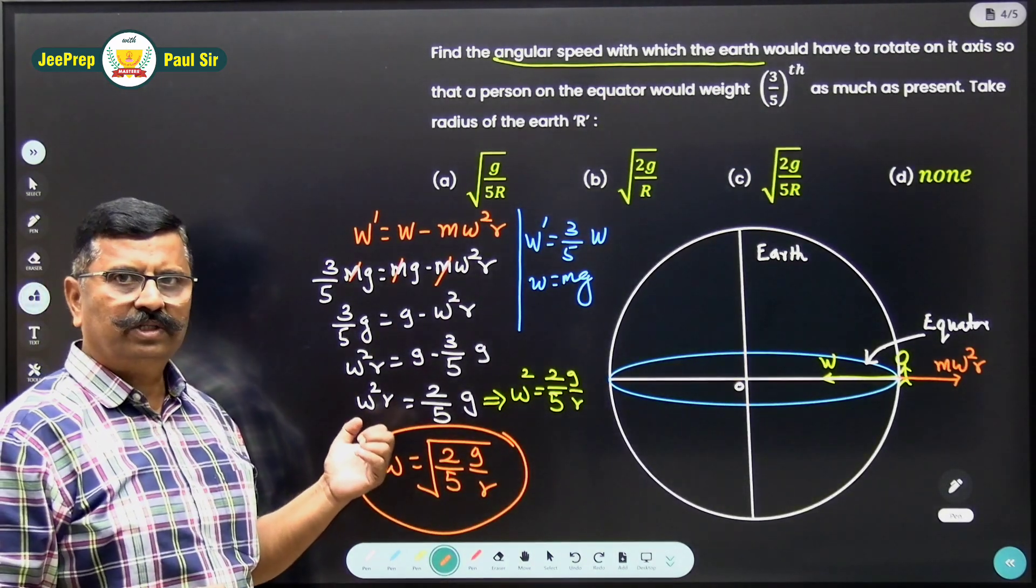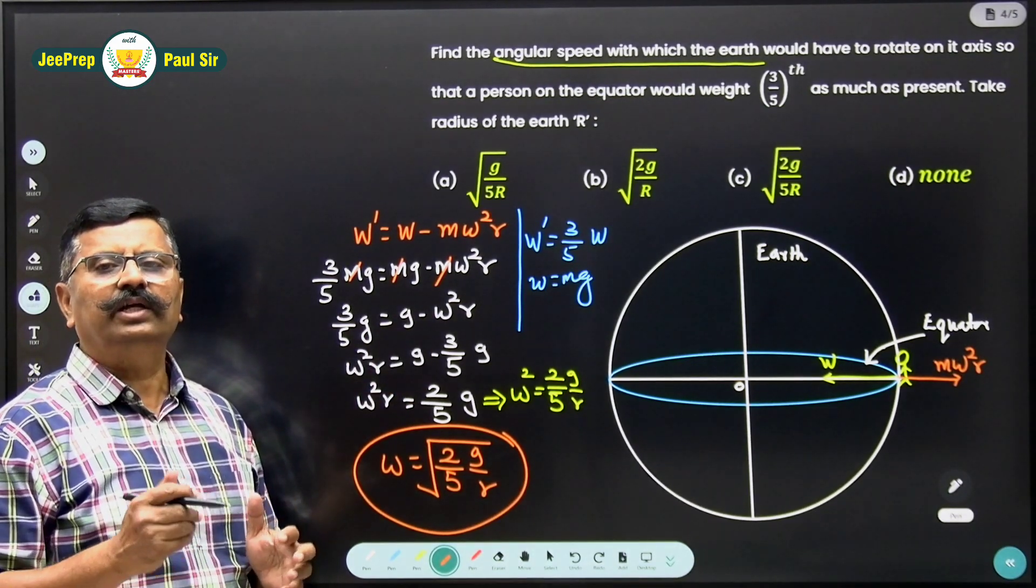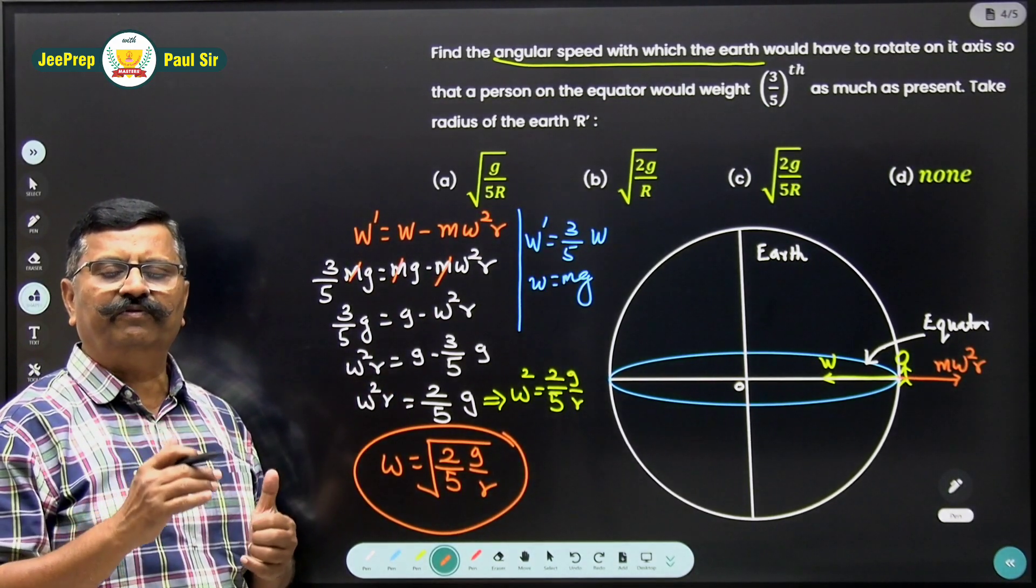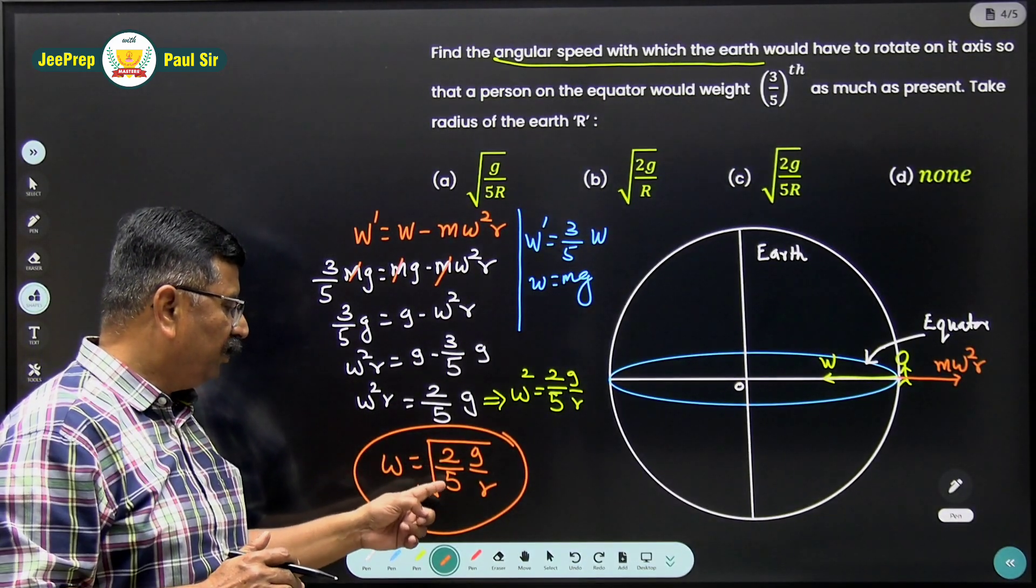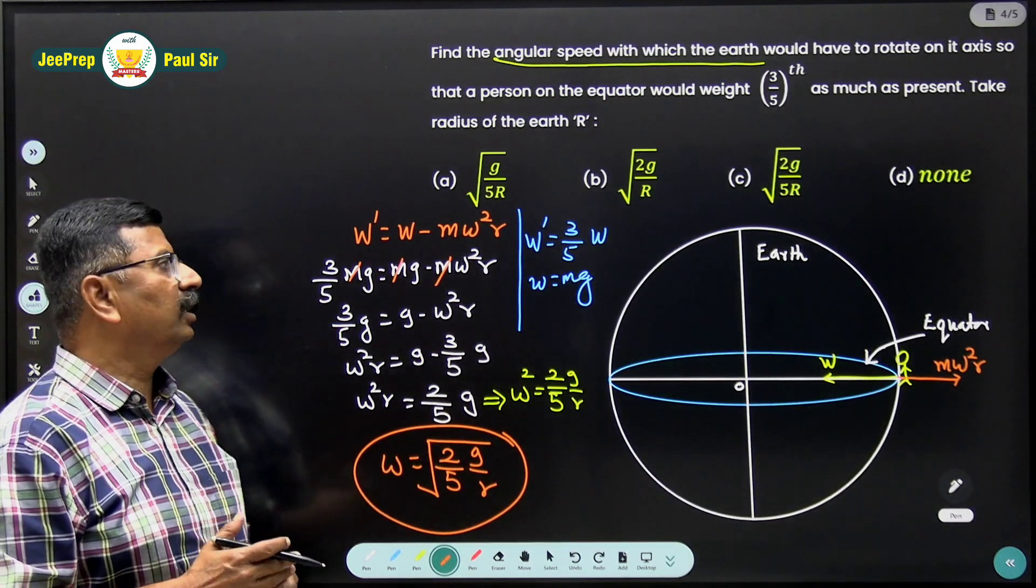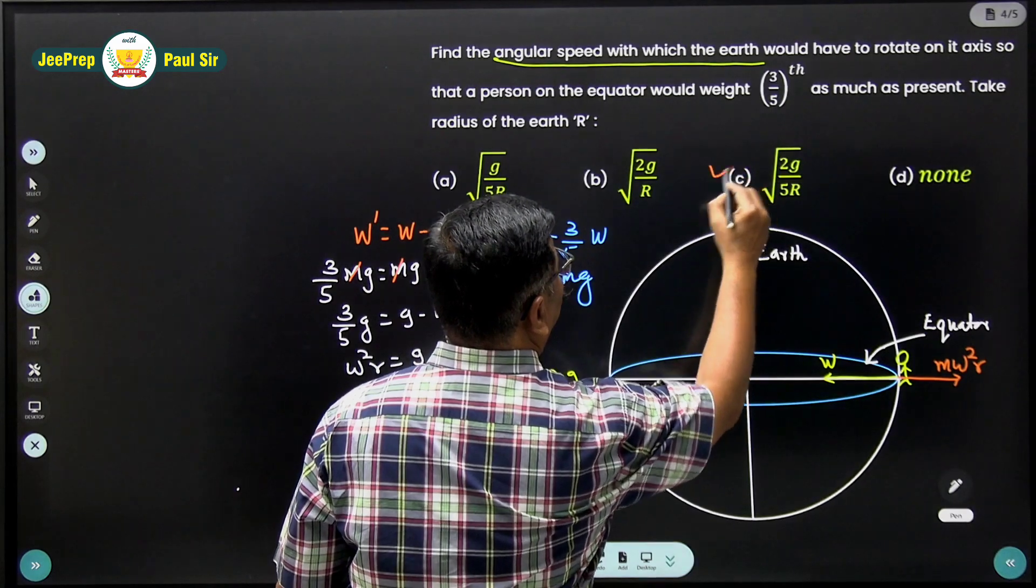So the angular speed of the person who is standing on the equator where his weight becomes 3/5 times the present weight is square root 2/5 g upon r. So let's see which is the correct option. So C is the correct option.